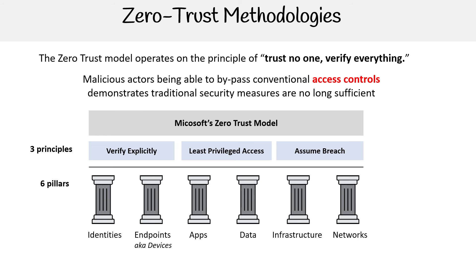If you wanted to put an emphasis on anything, it's going to be identities, which comes down to Azure AD. That seems to be the largest focus in this entire course for ensuring the zero trust methodology works. The zero trust model is not unique to Microsoft — GCP has its own zero trust model, AWS has its own zero trust model, but the one here is just going to really work for Azure.